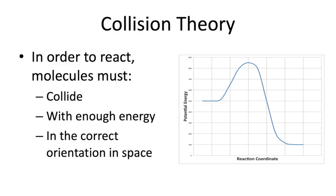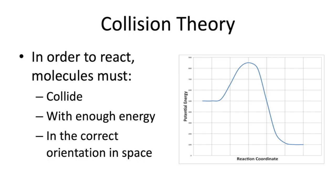Those three requirements have to be met for the reaction to be productive and produce products. We have a reaction coordinate diagram where we have reactants on the left, products on the right, and in the middle there's a hill — the activation barrier — with an activated complex or transition state at the top. The x-axis is not time; it represents the progress of the reaction. Molecules could get halfway up the hill and lack energy, falling back down, or reach the top but have wrong orientation and fall back. Or they could have enough energy and the right orientation and turn into products. It's also possible for product molecules to collide and react in the reverse direction.